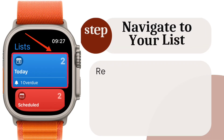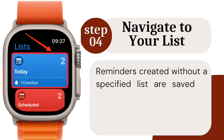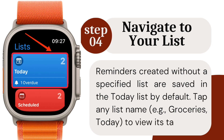Step 4: Navigate to your list. Reminders created without a specified list are saved in the Today list by default. Tap any list name, e.g. Groceries or Today, to view its tasks.